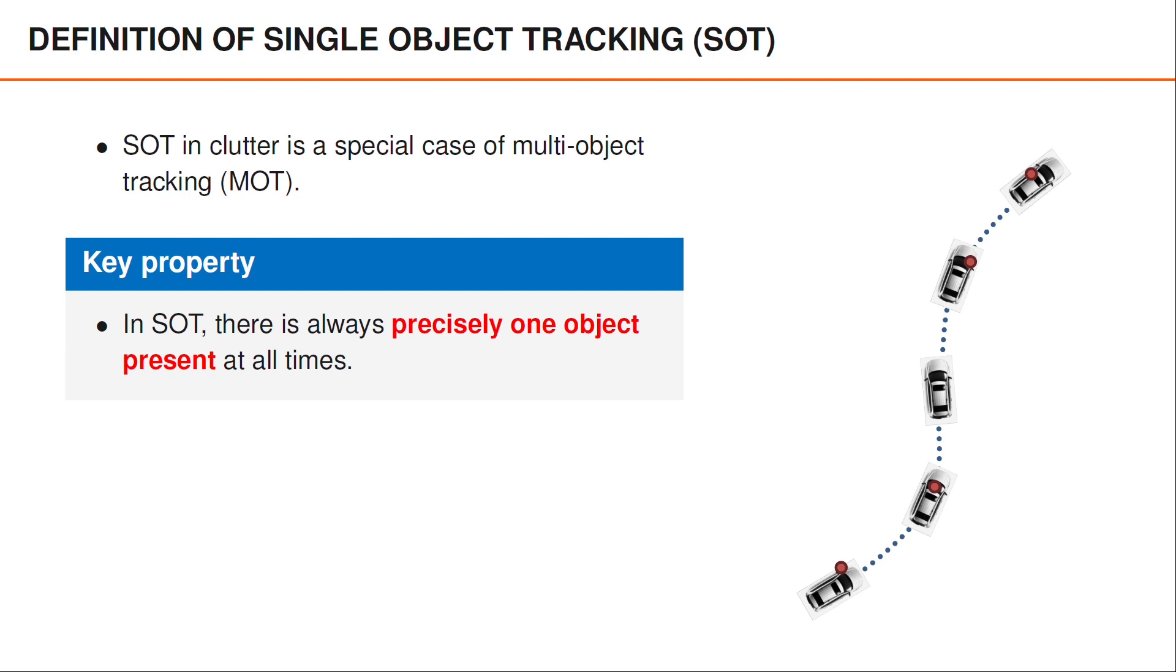The main difference between single object tracking in clutter and multi-object tracking, at least as defined in this course, is that single object tracking implies that we know that there is precisely one object present at all times. This makes single object tracking more similar to Kalman filtering and the type of non-linear filtering problems that you have seen in the past.